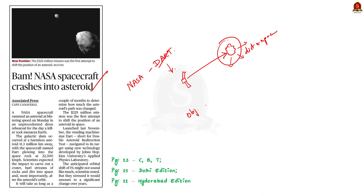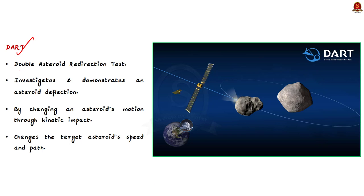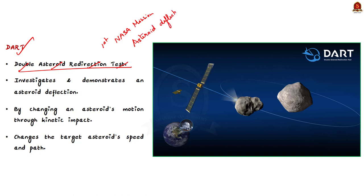We'll also see about near-earth objects and the near-earth object observations program. DART is the short form of Double Asteroid Redirection Test. It is NASA's first ever mission dedicated to investigate and demonstrate an asteroid deflection by changing an asteroid's motion in space through kinetic impact — that is, a spacecraft deliberately collides with the target asteroid, which poses no threat to Earth, in order to change the target asteroid's speed and path.